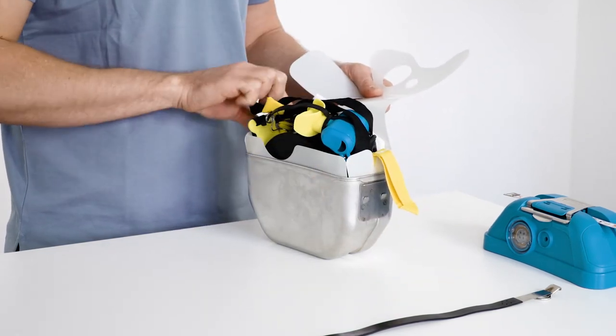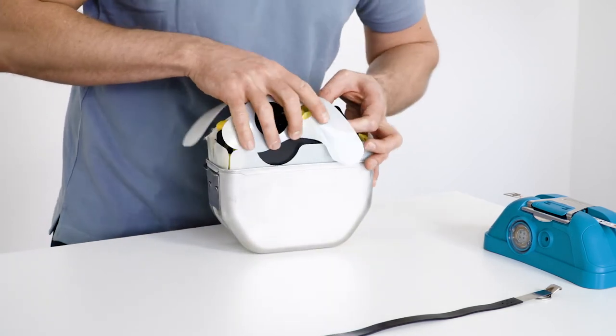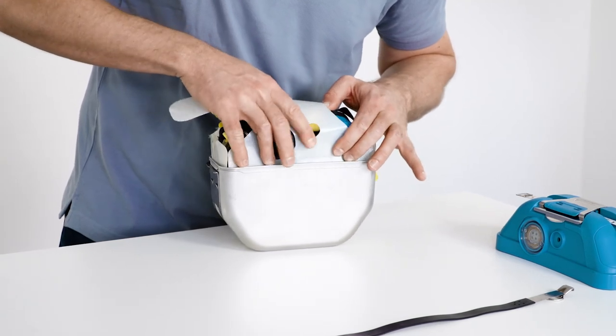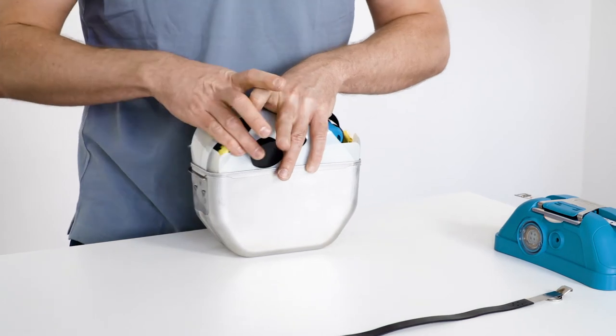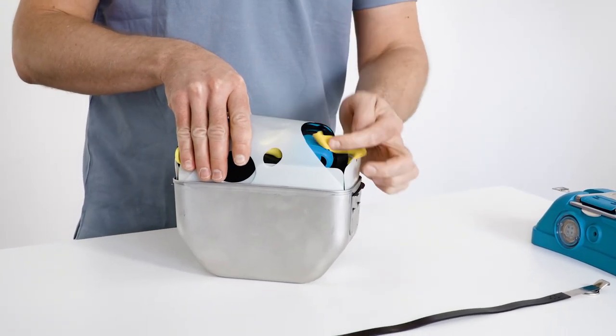Place the neck strap on the functional part and turn the packing aid over. Insert it between the bottom part of the device and the edge of the packing aid. Place the yellow tab on the heat exchanger.